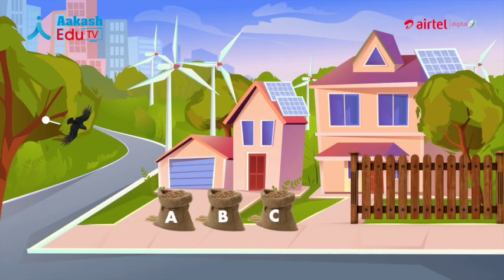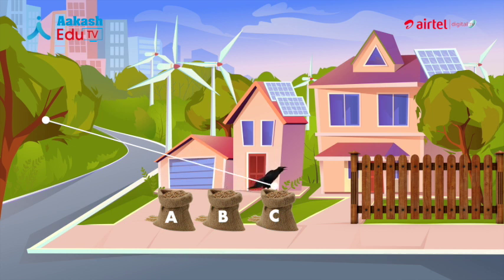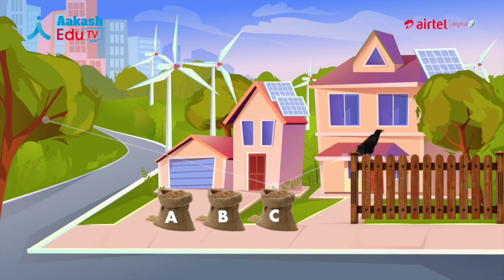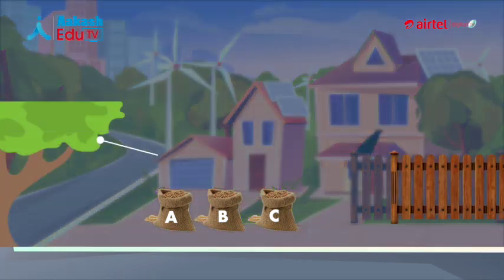Aap jaan kar hairan hoonge that the crow will opt for heap C in maximum probability, because out of the three this is the path of shortest time. Nature nae aise instincts hum savi ko survival ke liya hai. Aayye choice of C ke piche ki physics samashte hai.